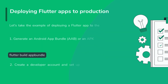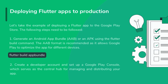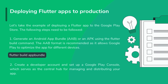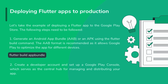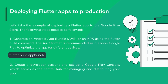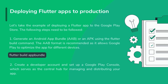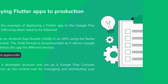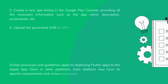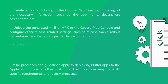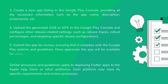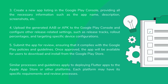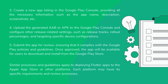Let's take the example of deploying a Flutter app to the Google Play Store. The following steps need to be followed. 1. Generate an Android app bundle (AAB) or an APK using the Flutter build command. The AAB format is recommended as it allows Google Play to optimize the app for different devices. 2. Create a developer account and set up a Google Play Console, which serves as the central hub for managing and distributing your app. 3. Create a new app listing in the Google Play Console, providing all the necessary information such as the app name, description, screenshots, etc. 4. Upload the generated AAB or APK to the Google Play Console and configure other release-related settings, such as release tracks, rollout percentages, and targeting specific device configurations.